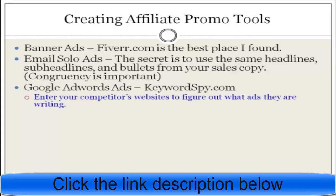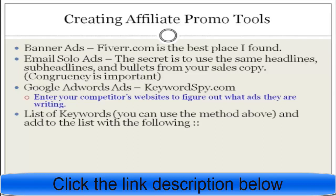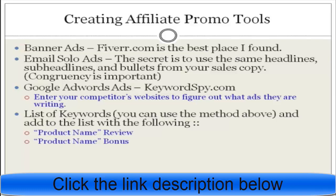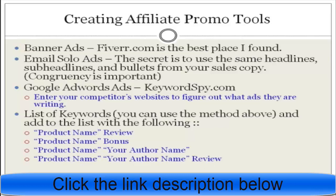Go to keywordspy.com, enter your competitors' websites, and figure out the ads they're writing. Also create a list of keywords using the method above. Some keyword ideas include your product name plus 'review', your product name plus 'bonus', your product name plus your name as the author, and so forth. These are just a list of promotional tools you can place onto your affiliate page.